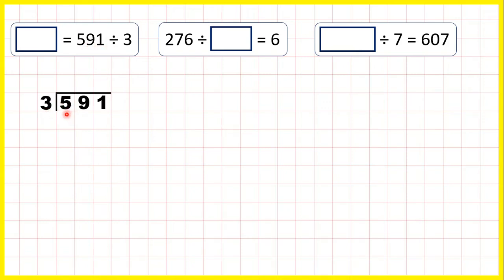So we can use short division. Taking the first digit, 5 divided by 3 is 1 remainder 2. That's because 1 times 3 is 3, and then from 3 we need 2 more to get to 5.